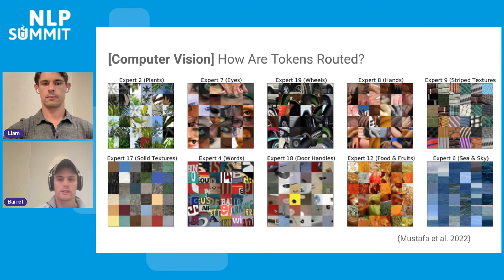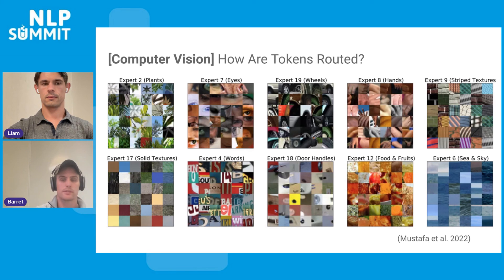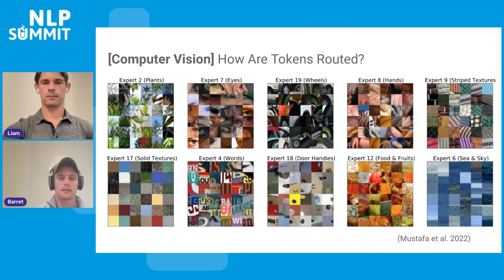We can also look at this in computer vision, where sparse expert models are being used and are very successful. Here we can see how image patches in a ViT model are routed in mixture-of-experts models. There is an expert that specializes in plants, eyes, wheels, and so forth. It's cool to see that even across modalities, these experts are specializing in semantically meaningful ways.